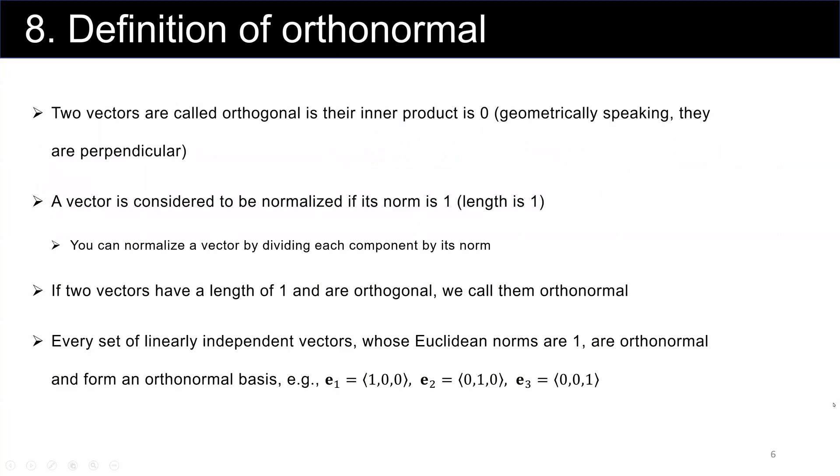First, we go over the definition of orthogonal. Two vectors are called orthogonal if their inner product is equal to zero. If you want to talk geometrically, it means they are perpendicular.